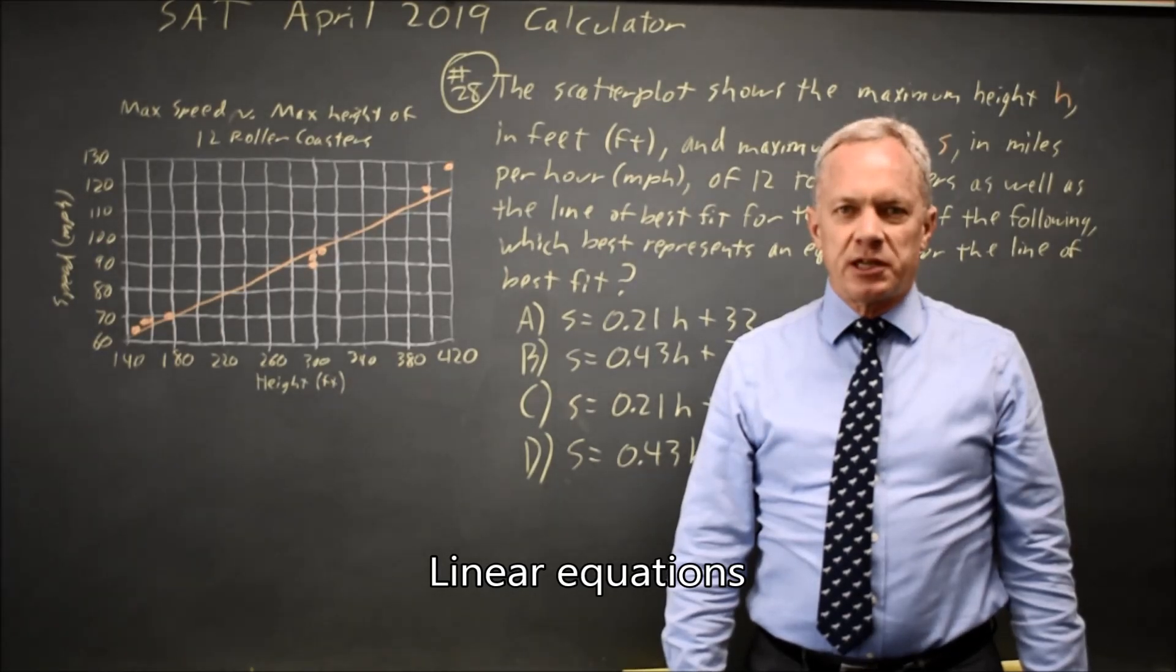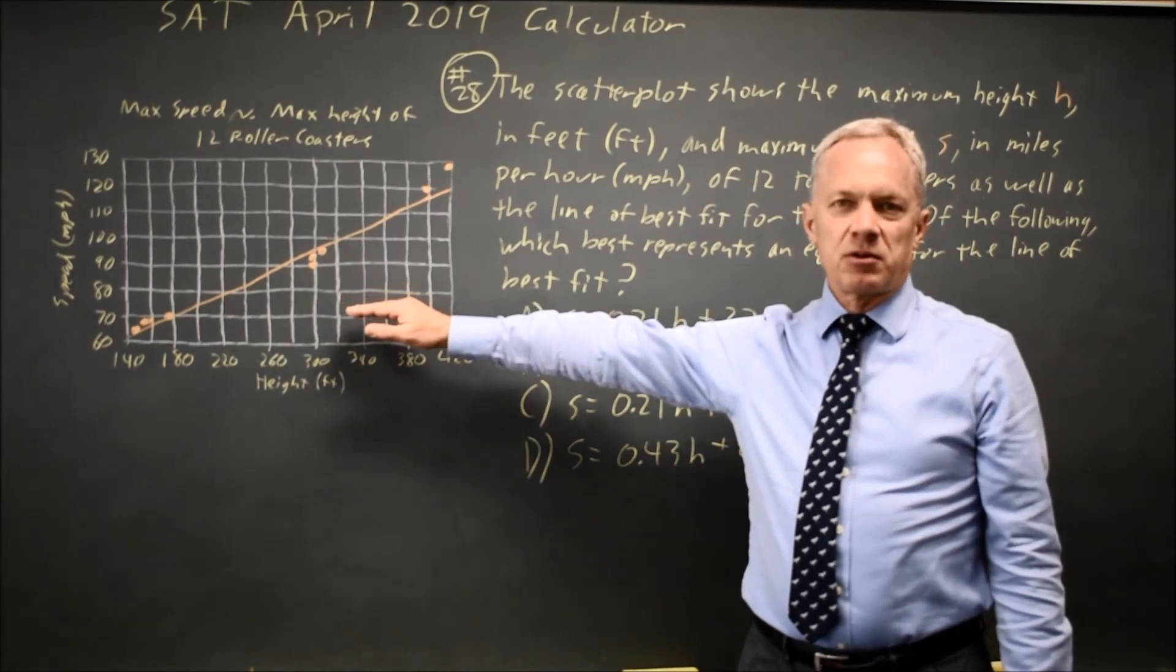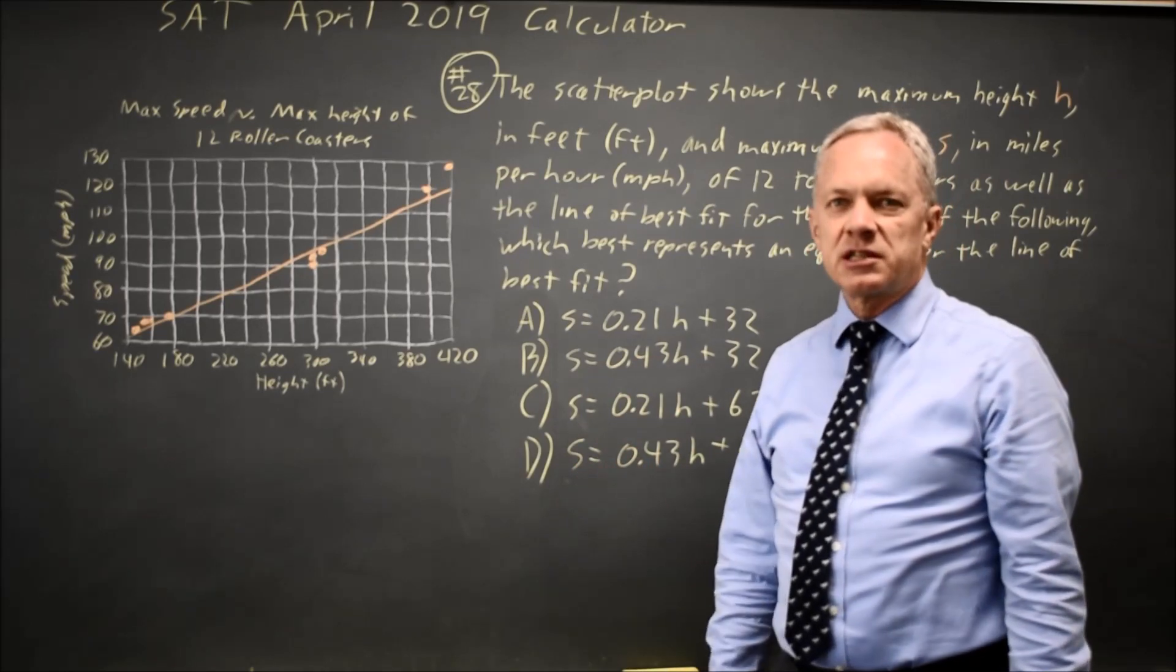This is calculator question number 28 from the April 2019 SAT. College Board gives a scatter plot with a line of best fit, and they ask which of these four linear equations best fits the data.